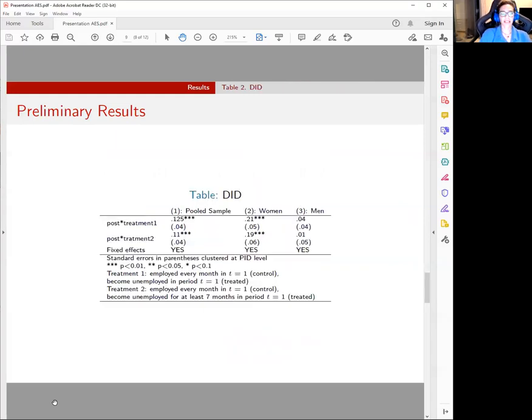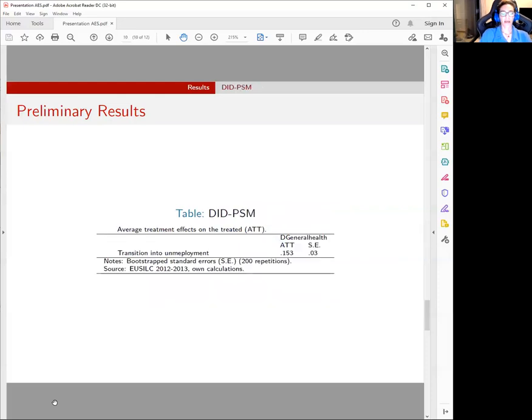For the difference-in-differences analysis, as I said before, we use monthly information on the employment status of the individuals. We also split by gender to see how these results differentiate. We see that unemployment negatively affects health with the same magnitude for both specifications with the results mainly being driven by women, as we see from the table.